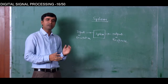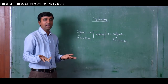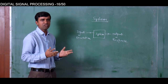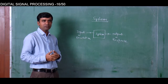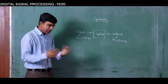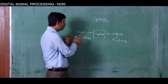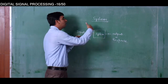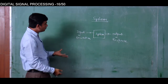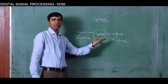A discrete time system takes discrete time signals as inputs and produces discrete time signals as output. For a continuous time system, it takes continuous time signals as inputs and gives continuous time signals as output. Basically, a system is an entity — you can think of it as a box — where you give some input and get output generally in the same form.